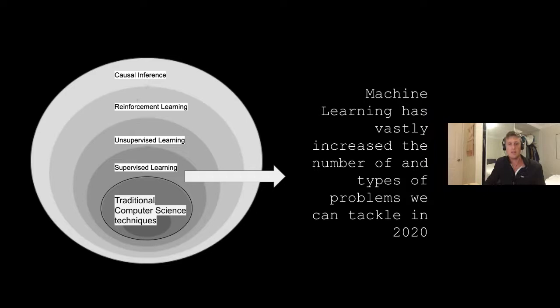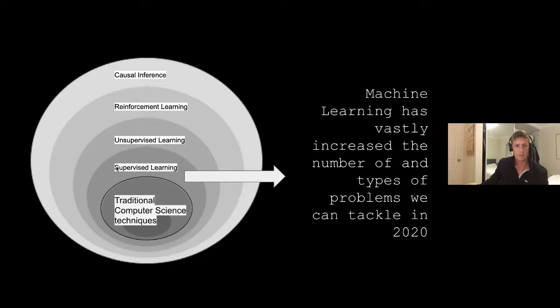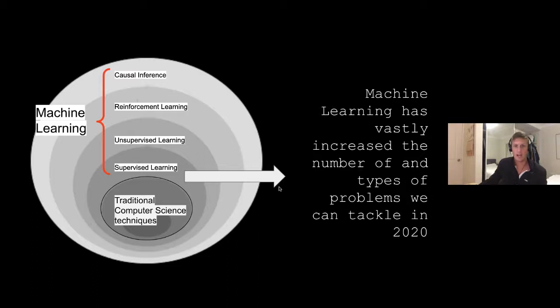The point of all of this is not to explain how image classification works, but to get across the idea that machine learning has really increased the problems we can tackle with computers. In this little black oval, that's like the problems we could tackle with traditional computer science techniques. Throw in machine learning techniques and the problem space has vastly increased.